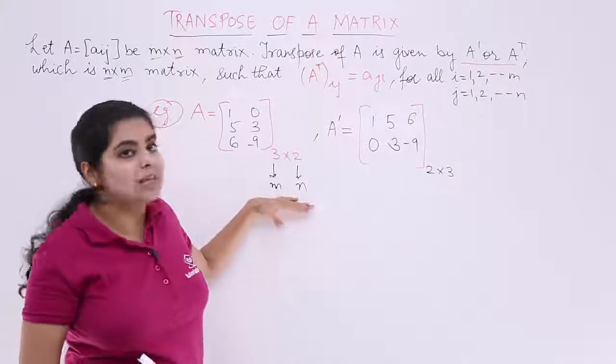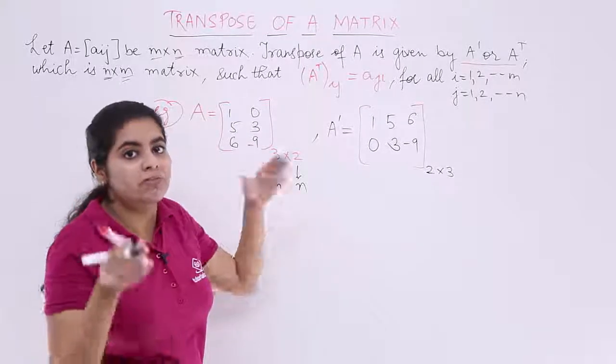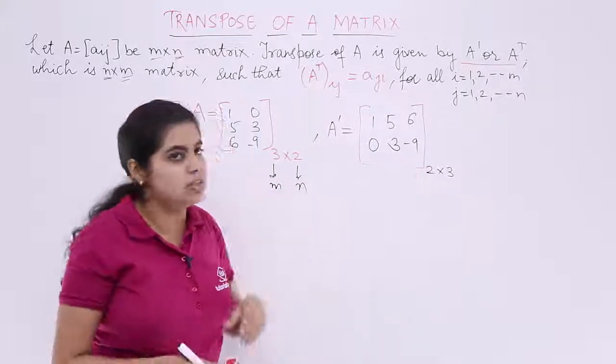That means what? We were given 3 rows, 2 columns. We now have 2 rows, 3 columns. This is the transpose.